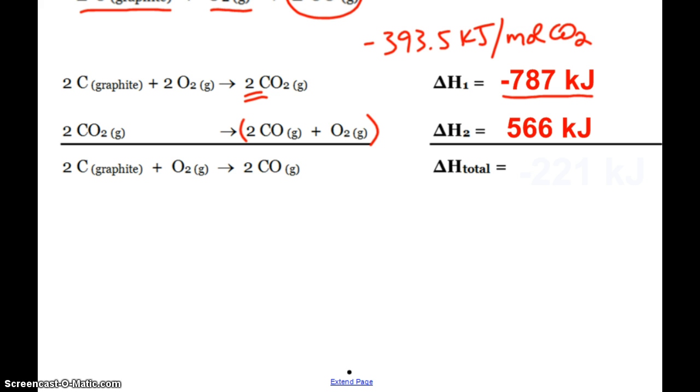it has a positive 566 kilojoules for the delta H. Now when I add these two delta H's together, that gives me my overall delta H for this reaction, even though I didn't run that one directly. Because again,